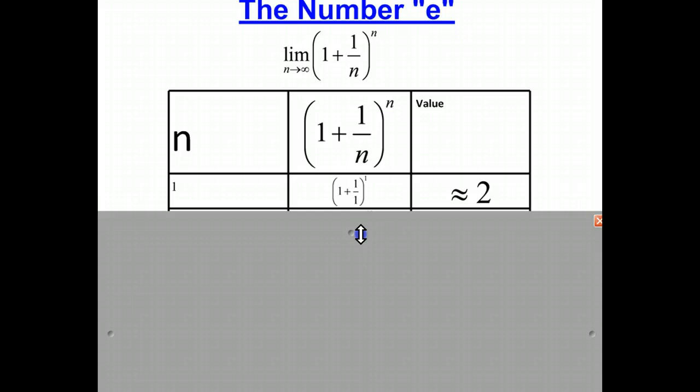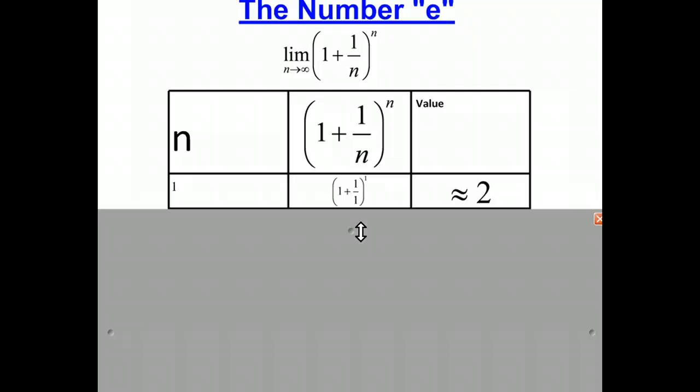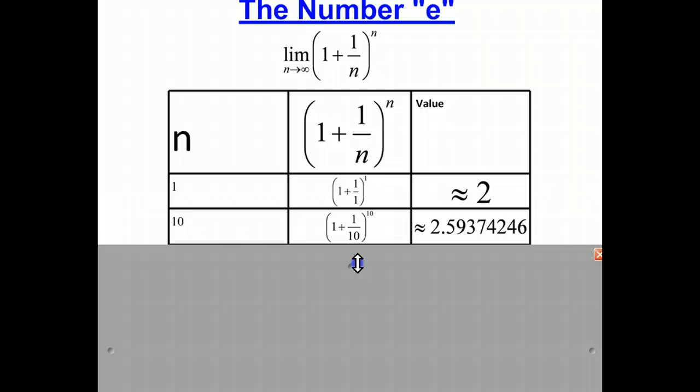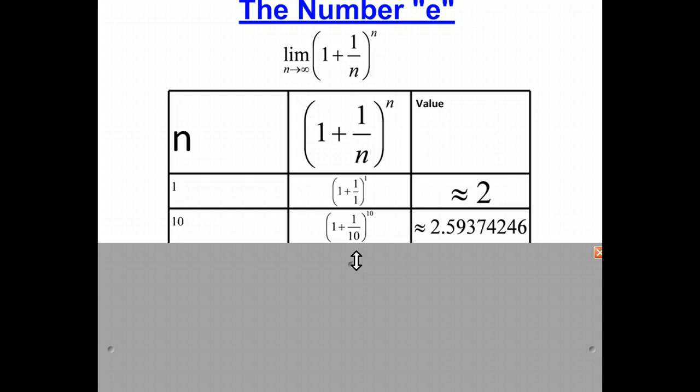So first we'll put in the number 1. If we put 1 in, we're evaluating the expression 1 plus 1 over 1 to the 1st power. And if you calculate that out, that comes out to be the number 2. And what we're going to do is we're going to let n get bigger and bigger. So if n is equal to 10, you can see we come out now with a decimal, about 2.59374246.